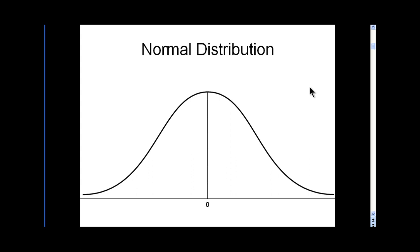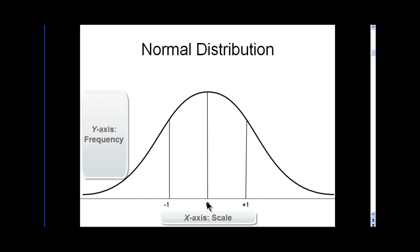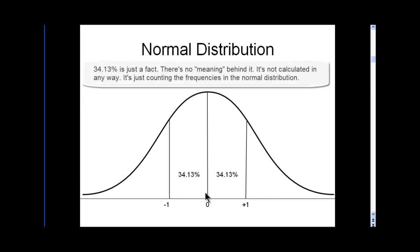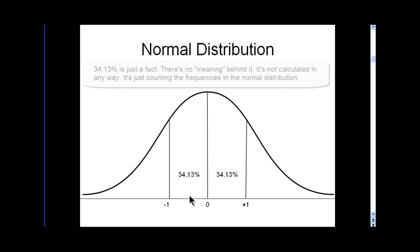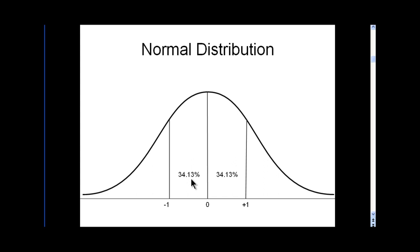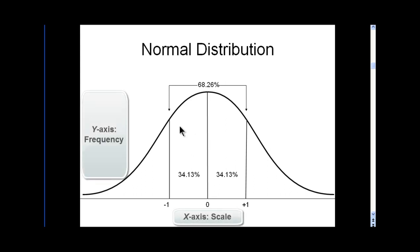If you're not totally clear on z-scores or how to calculate them, I have a video on that. Going in terms of standard deviations within a normal distribution — one positive and one negative standard deviation above and below the mean of zero — you know for certain that in a perfectly normal distribution, 34.13% of observations fall between zero and negative one, and another 34.13% fall between zero and plus one. So in total, you get 68.26% of all observations within plus or minus one standard deviation from the mean.